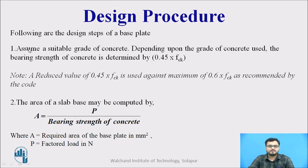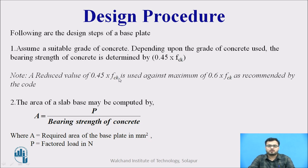Now we will see the design procedure. First, assume a suitable grade of concrete and find its bearing strength, which is given by 0.45·fck. The code recommends a maximum of 0.6·fck, but we use the reduced value of 0.45·fck. The required area of the base plate is then calculated as Area = P / (0.45·fck), where P is the factored load on the column.